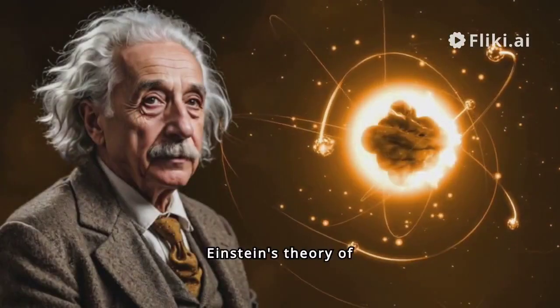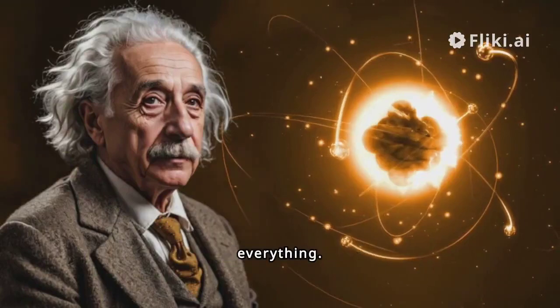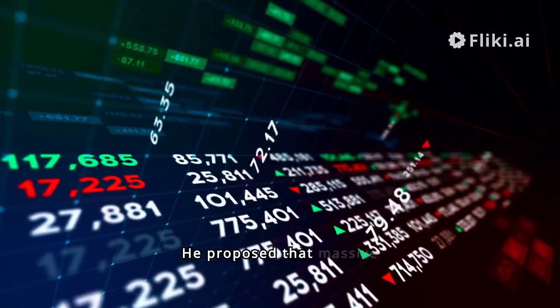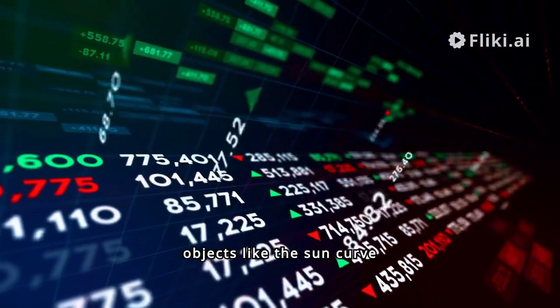Einstein's theory of general relativity changed everything. He proposed that massive objects like the sun curve space around them.